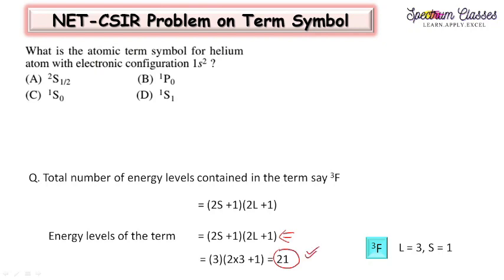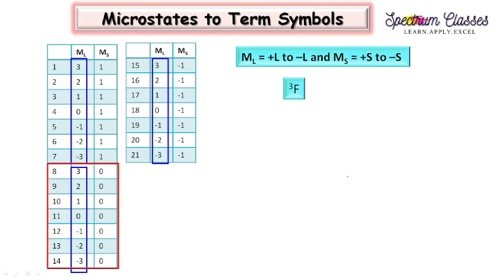So altogether there are 21 energy levels for the given ³F term. I have discussed this in the d² example where I discussed all the microstates for the d² symbol — these are the number of microstates which give us the ³F term symbol.